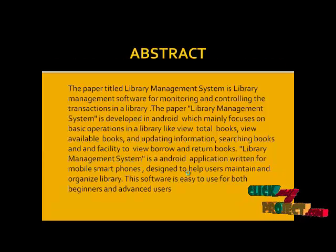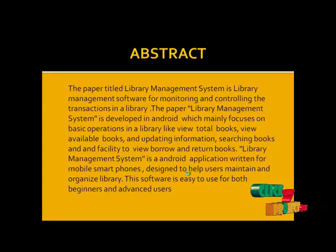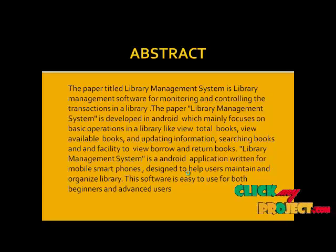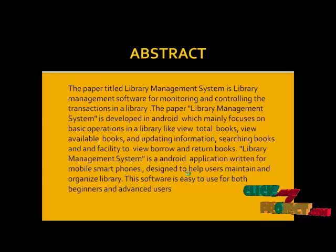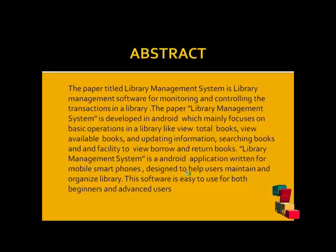Let's see the abstract of our project. The Library Management System is used to view the transactions of the library. This system mainly focuses on basic operations in the library, like viewing the total books and book names, and viewing available books to search for a specific book that is available or not available in the library. In our existing system, all the transactions of the books are done manually, so it takes more time for transactions like borrowing a book, returning a book, and also for searching a book. Another major disadvantage is that preparing the list of books borrowed and the available books in the library will take more time.